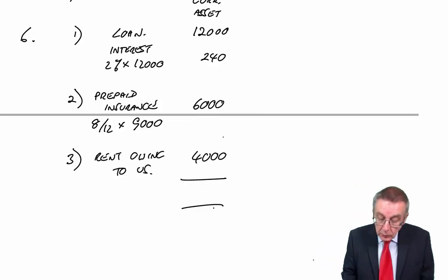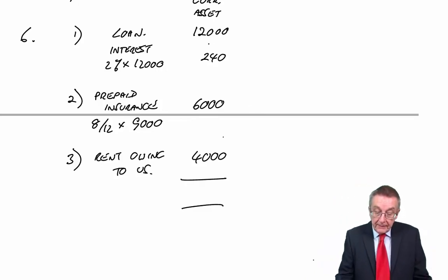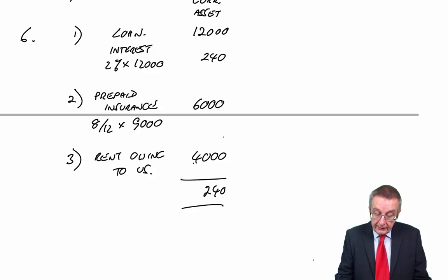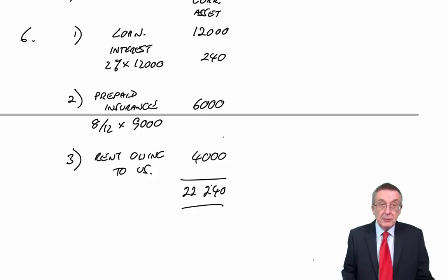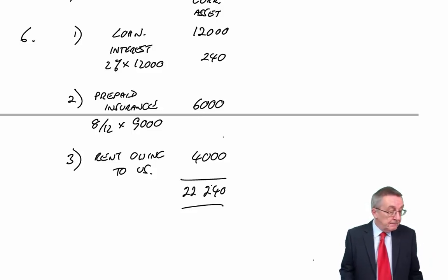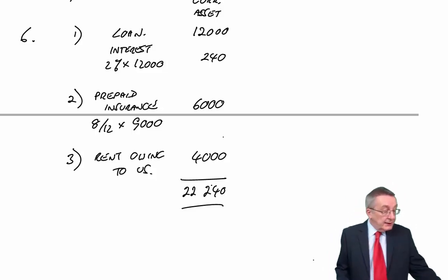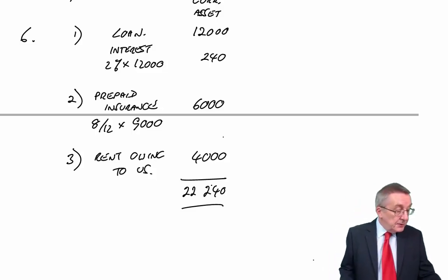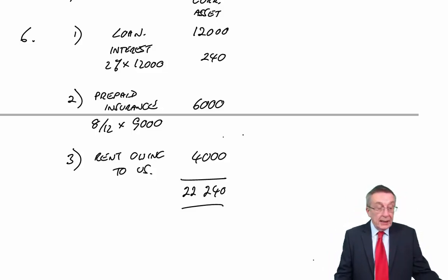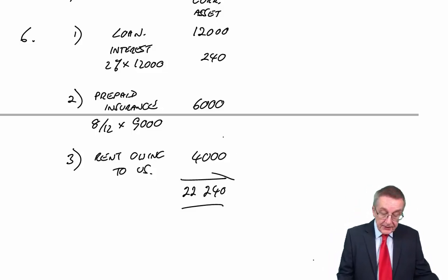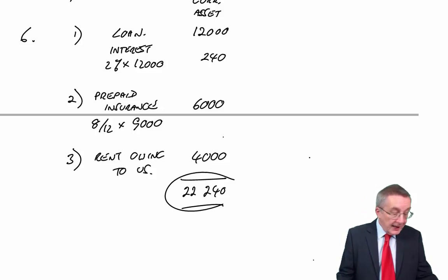The total we're owed is £240 plus £12,000 plus £6,000 plus £4,000 — that's £22,240. So current assets £22,240, there were no current liabilities. The answer is B.